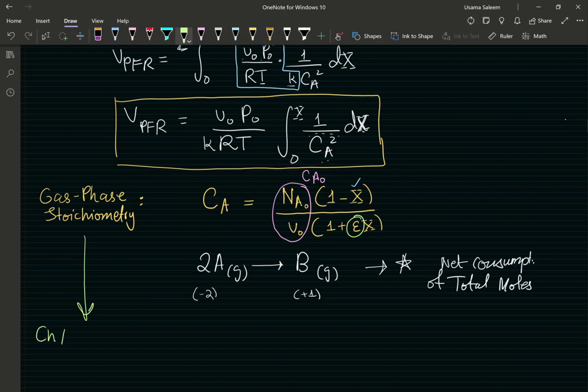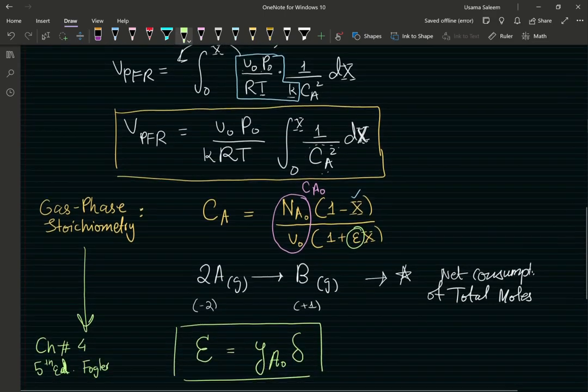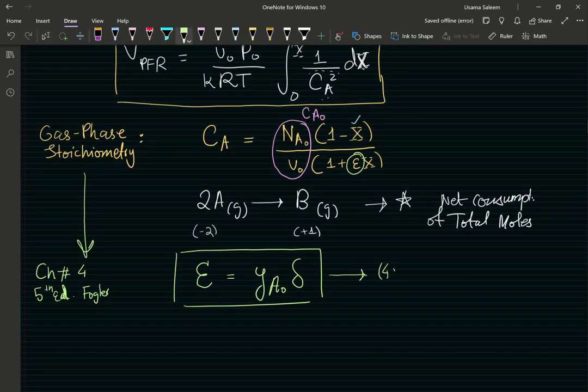Gas phase stoichiometry. And if I refer to chapter four, fifth edition of Fogler. Dr. Fogler. Good guy. What a great guy. He says that epsilon is just going to be equal to the inlet mole fraction. This is the inlet mole fraction of A times another parameter, delta. This right here is going to be my fourth equation. I have a pure feed. So, I know my inlet mole fraction. This is just equal to one. But what about delta?